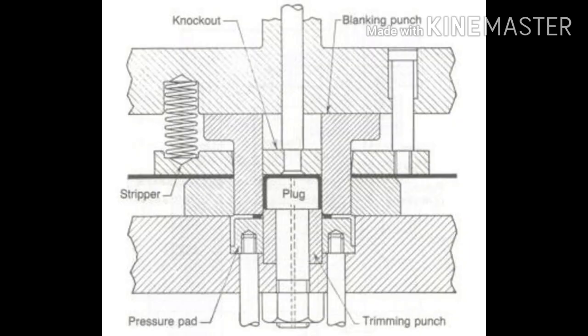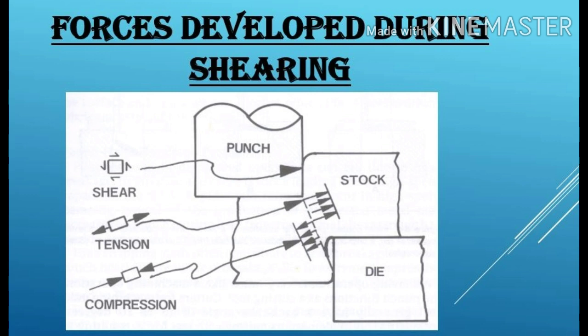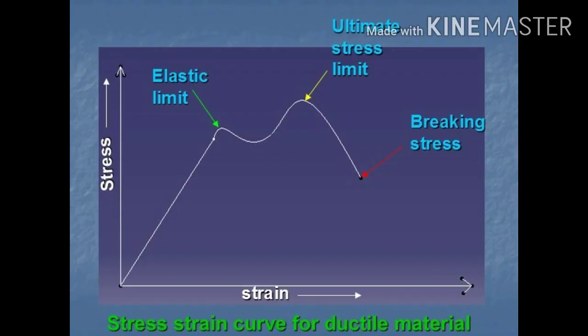Before going to start the understanding of shearing operation, we have to get the idea about the shear theory. When any shear operation happens, due to the material properties, understanding the stress-strength curve is necessary. Look at the image on the screen — the stress-strength curve for a ductile material. We have to understand the terms: elastic limit, ultimate stress limit, and breaking stress. The elastic limit is when we apply any force, the material will deform, and after removing the force, the material will regain its original shape. The point on the stress-strength curve representing this is called the elastic limit.